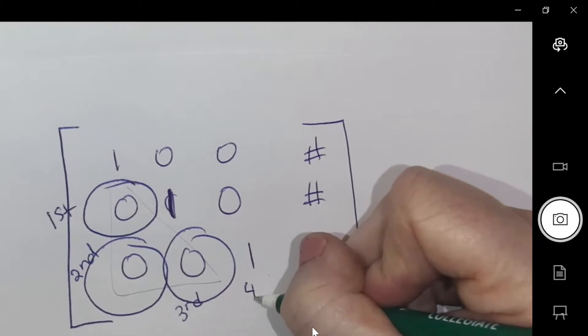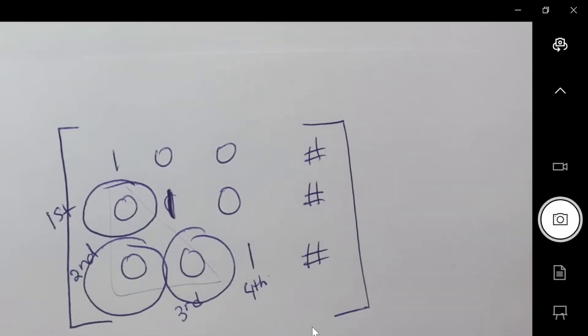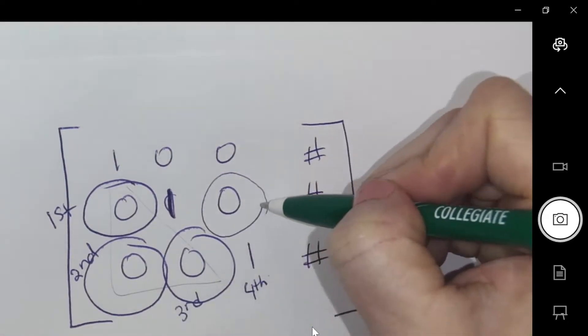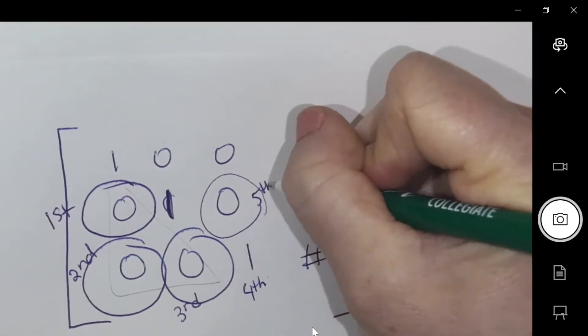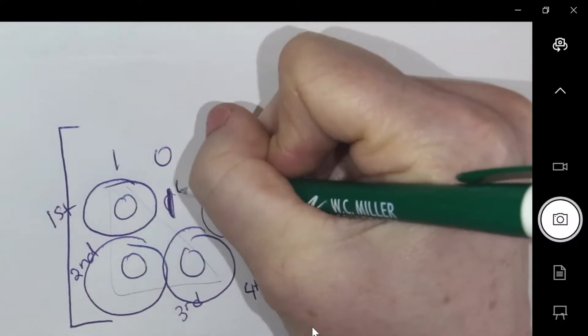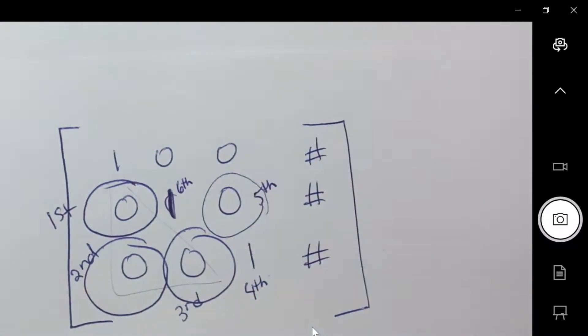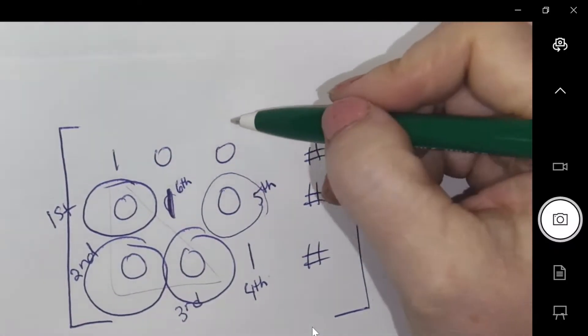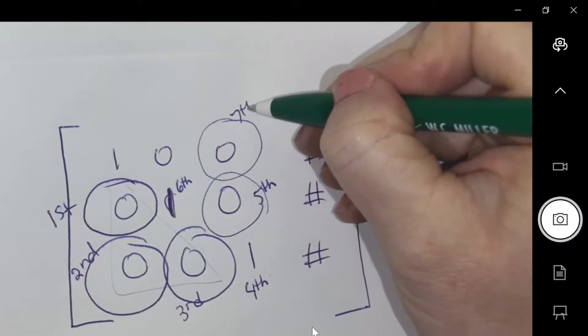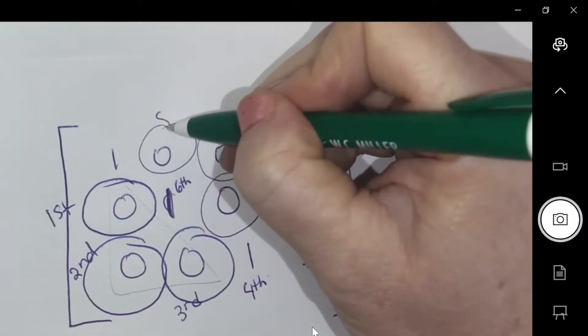Then this is going to be fourth, we're going to turn that into a one. Then this zero is going to be the fifth. Then we're going to one this out, sixth. Then this, seventh. Then this, eighth.